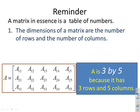As a reminder, a matrix is essentially a table of numbers. The dimensions of a matrix are given by the number of rows followed by the number of columns. Here you can see that A has three rows and five columns, and therefore it's defined as 3 by 5.